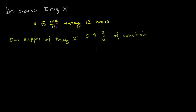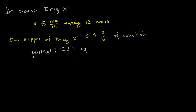So if I were to take one milliliter out of my solution and give it to someone, I'm essentially giving them 0.9 grams of this drug. The patient weighs — and maybe we should say they mass because kilograms is mass, but we get the idea — the patient is 72.7 kilograms. The question is: how many milliliters of solution do we have to give to the patient per dose? So milliliters of solution per dose — that's our question.